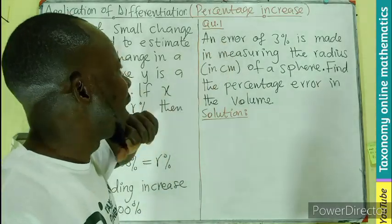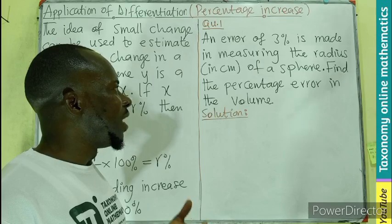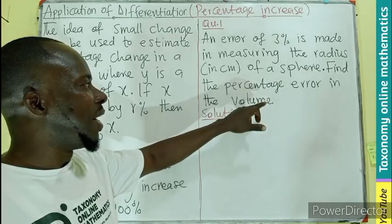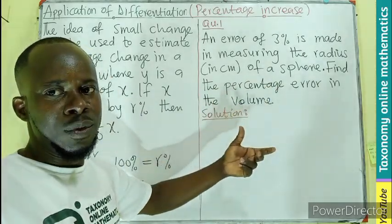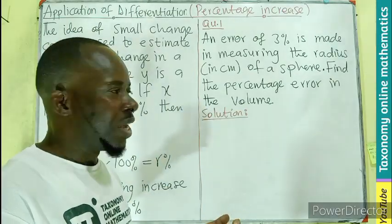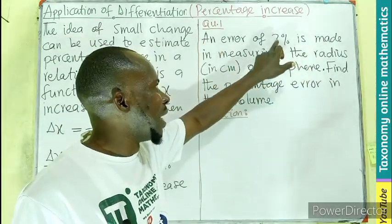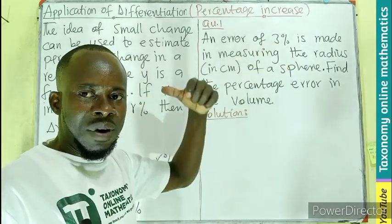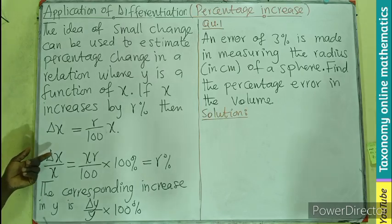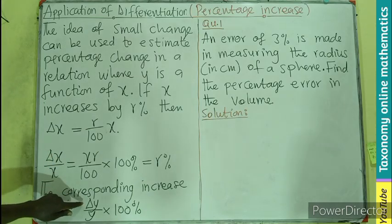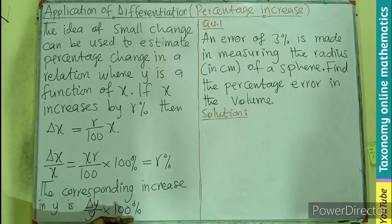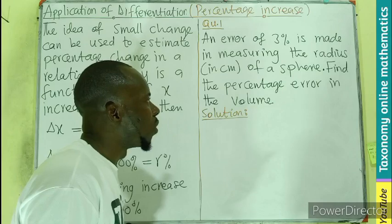So a question. An error of 3% is made in measuring the radius in centimeters of a sphere. We have to find the percentage error in the volume. There is a change in the radius, the measurement of the radius by 3%. We are looking for that change in the volume. Remember, the change in x, we will find the corresponding change.